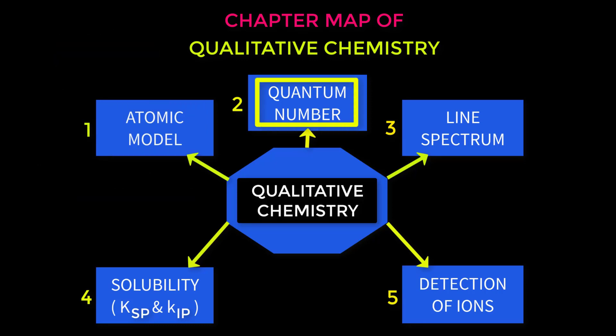Quantum number is our second topic. From this topic we will have to learn how to calculate four quantum numbers of an electron.